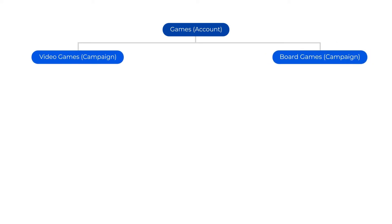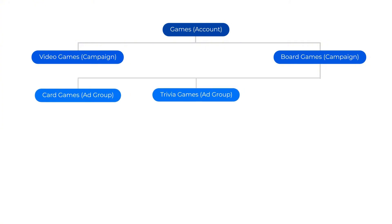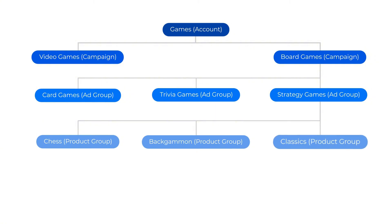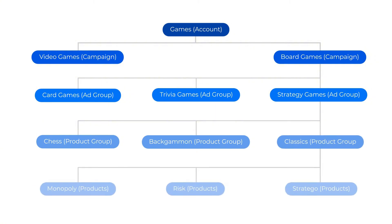For example, if you sell games, your structure could look like this. Here we see a hierarchical structure of your catalog with campaigns divided by top categories — video games and board games. Within the board games campaign, the ad groups are then divided again between card, trivia, and strategy. Then within strategy, we have our product groups, which are chess, backgammon, and the classics. Finally, you have the products themselves.